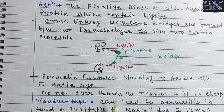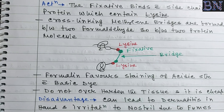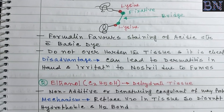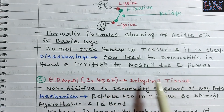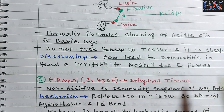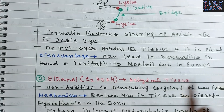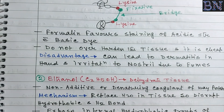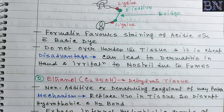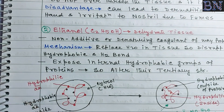An important note: formaldehyde does not over-harden the tissue. However, it can lead to dermatitis on the hands and irritation to the nostrils due to fumes — these are the disadvantages. Every fixative type has both advantages and disadvantages.